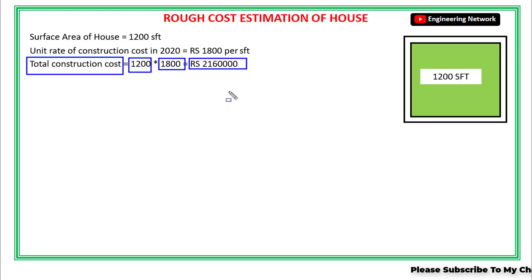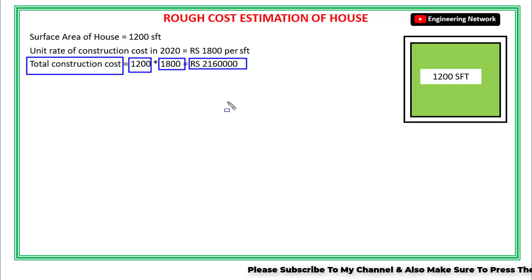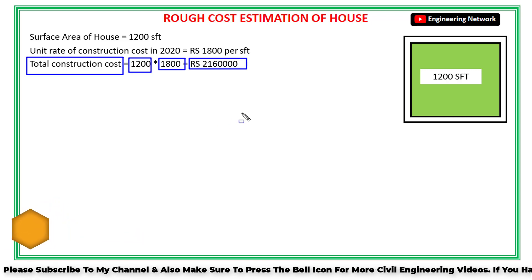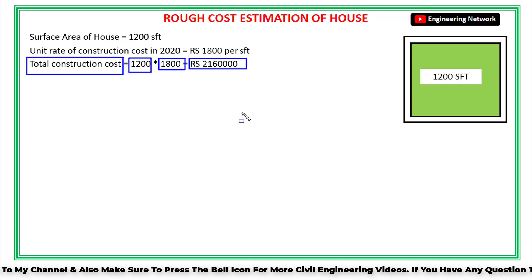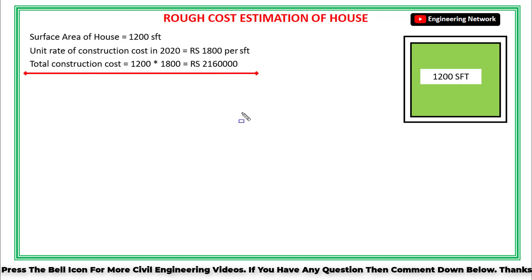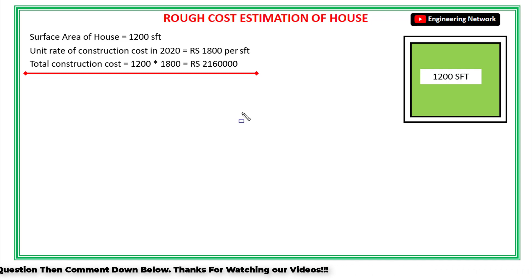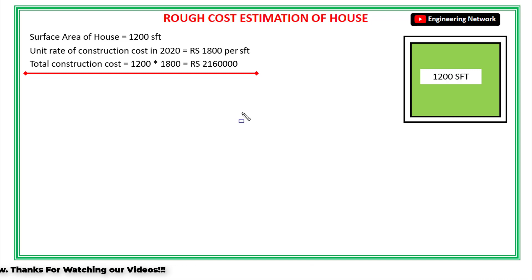Now this is only the construction cost of this house. Apart from the construction cost, I have to find out the cost of water supply, the cost of electricity work, and also the cost of gas supply. I will also add some percentage of contingency to the total cost of the house.